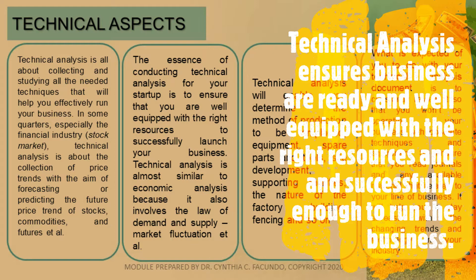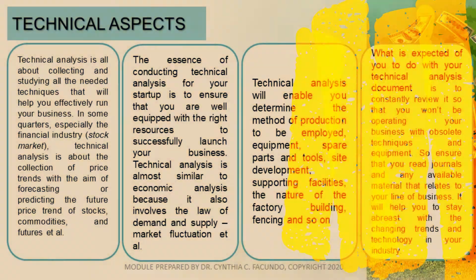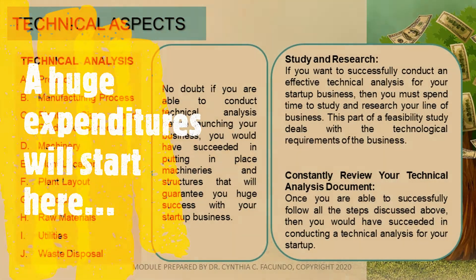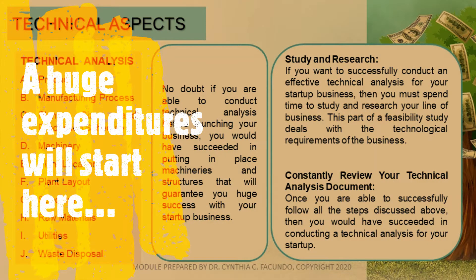Technical analysis is also similar to economic analysis because it also involves the law of demand and supply and market fluctuation. Technical analysis will enable you to determine the method of production to be employed, equipment, spare parts and tools, site development, supporting facilities, and the nature of the factory building, and so on. This part of Visibility Study deals with the technological requirement of the business.